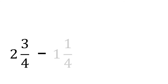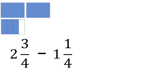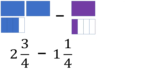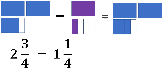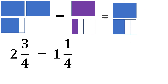Let's say you are tasked to solve this: 2 and 3 fourths minus 1 and 1 fourth. How do we subtract these mixed fractions? Let us first look at the figures. 2 and 3 fourths minus 1 and 1 fourth — this means we want to remove 1 and 1 fourth from 2 and 3 fourths. Let's copy the 2 and 3 fourths and remove 1 and 1 fourth from it — that's 1 whole and 1 fourth removed. So what do we have left? It's 1 and 2 fourths. So the expected answer is 1 and 2 fourths.